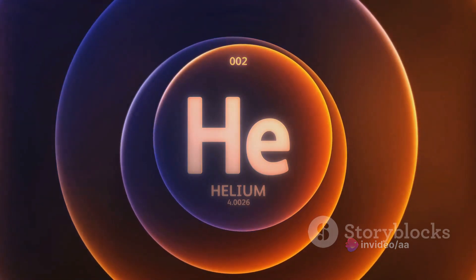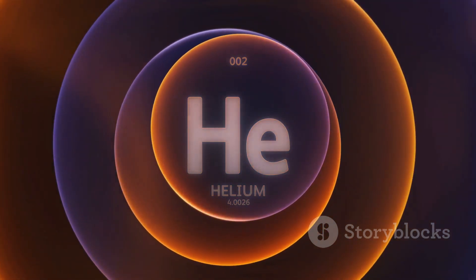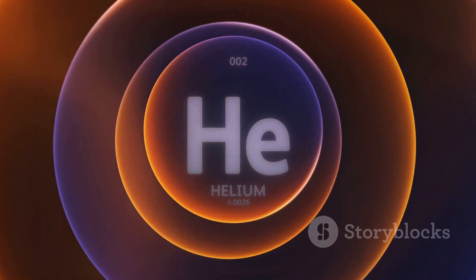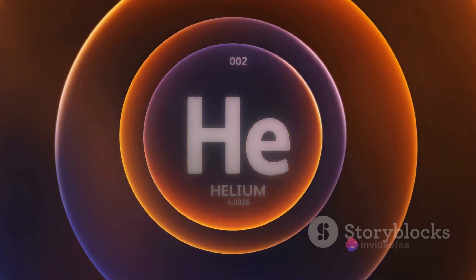Hydrogen, for instance, has an atomic number of one, signifying its one proton. Meanwhile, helium with two protons boasts an atomic number of two.